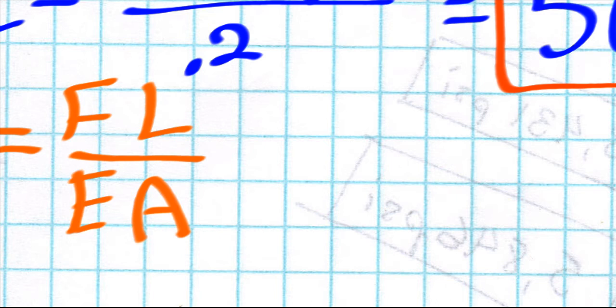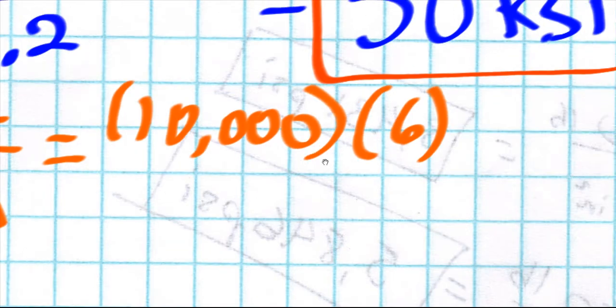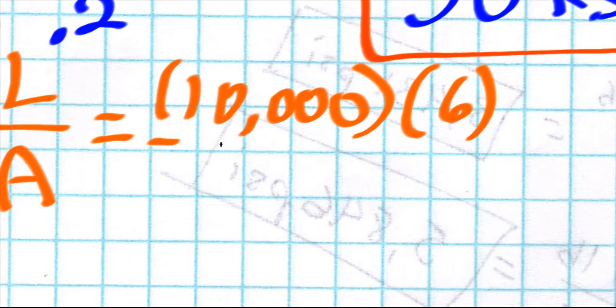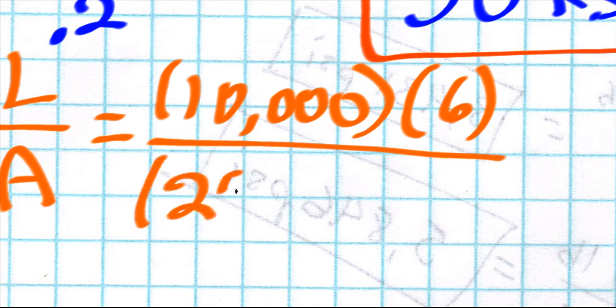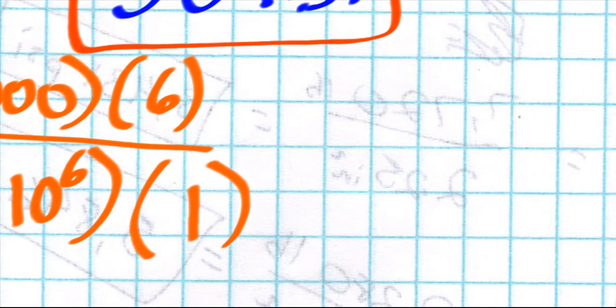So I'm just going to start with deformation of A. It'll be 10,000 times 6 divided by E, which is going to be our 29 times 10 to the sixth, and then the area which is just one inches squared. And I've already pre-worked this out so I don't have to fiddle with my calculator in front of you guys.